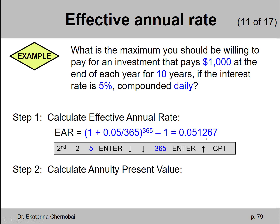We get 5.1267% per year. It's a little bit higher than the quoted rate of 5% which is how it should always be. And then in the second step you use the effective rate as the interest rate to find the annuity present value.